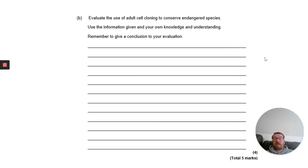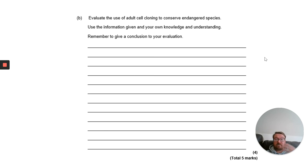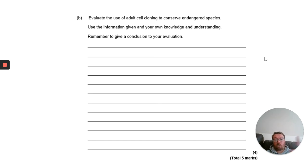The next question asks you to evaluate the use of adult cell cloning to conserve endangered species. Use information given and your own knowledge. Consider whether it's right or wrong to do this — this could relate to our ethical responsibility as humans to preserve organisms for future generations. This is a harder question and will be studied in more detail when we return to school, so if you get stuck, that's completely okay. Please pause the video now.